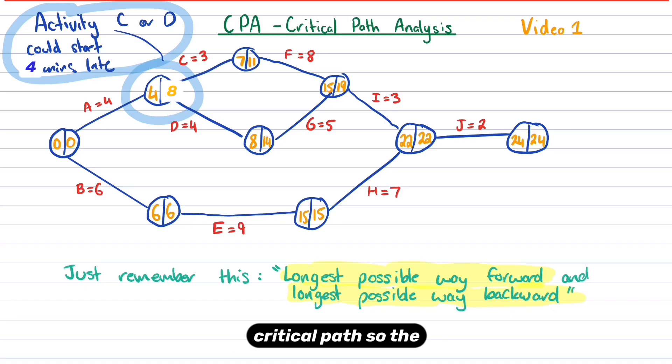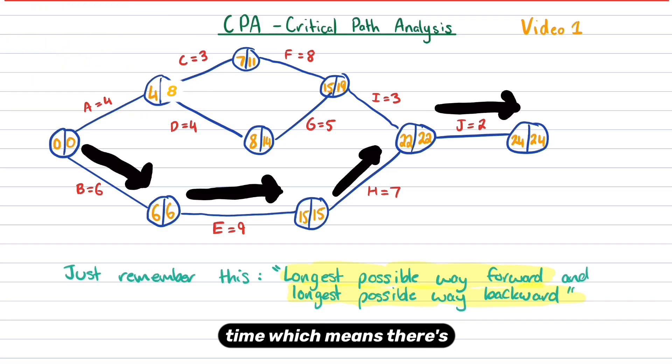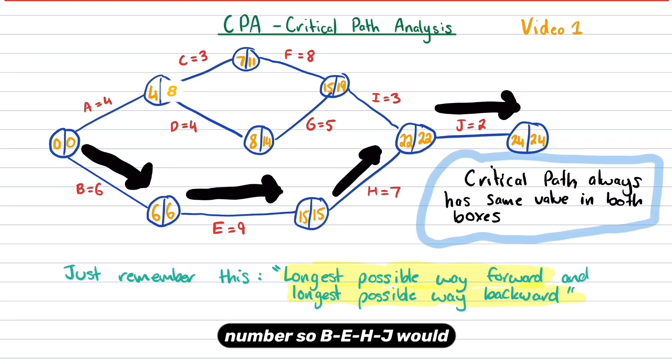Now let's talk about the critical path. So the critical path is a path where there's no float time, which means there's no space in between the earliest start time and the latest start time. So notice along this critical path, all of the nodes have the same number. So B, E, H, and J would be considered the critical path.